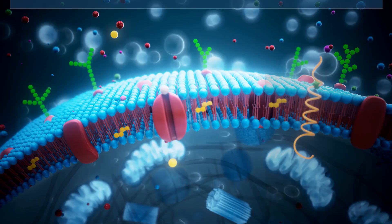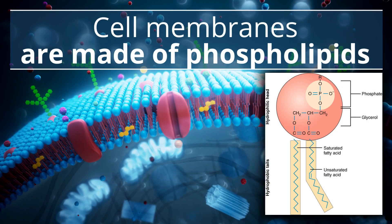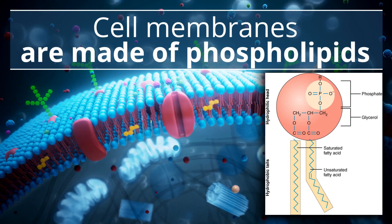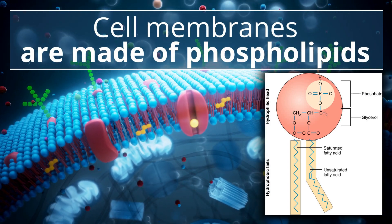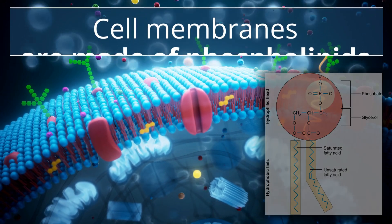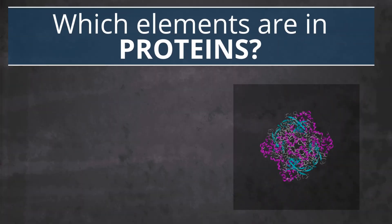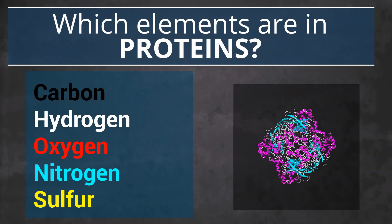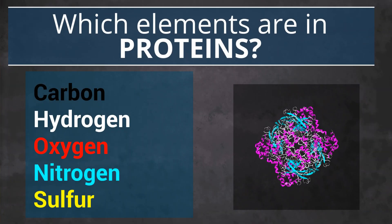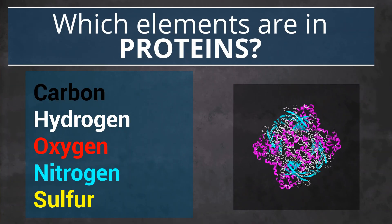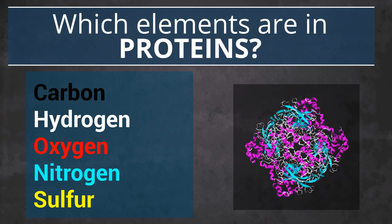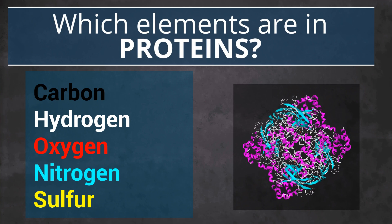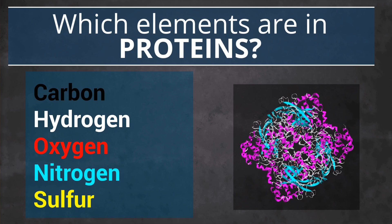During Unit 2, we will talk about phospholipids — an important type of lipid that makes up cell membranes. Proteins also have carbon, hydrogen, and oxygen atoms. In addition to these three elements, proteins also have nitrogen and sulfur.